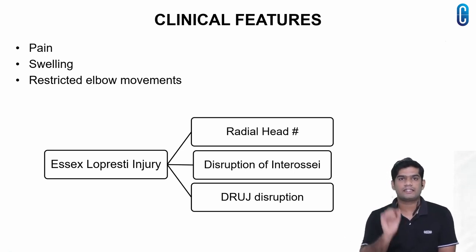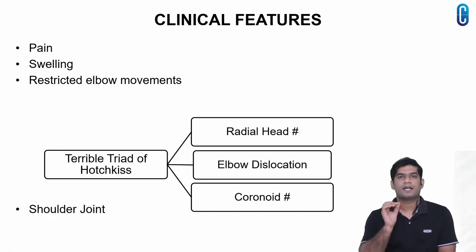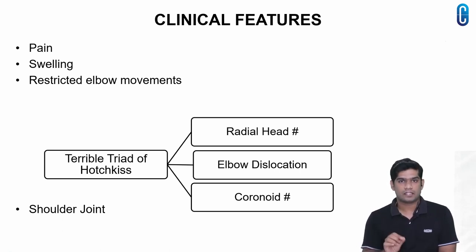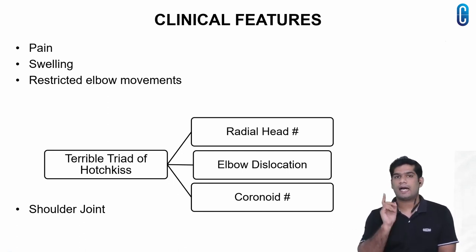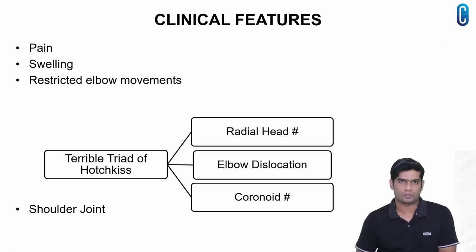Therefore, remember to check for forearm tenderness and wrist tenderness. A clear X-ray image is needed to rule out a terrible triad injury, which includes radial head fracture, elbow dislocation, and coronoid fracture. As it is a high energy injury, always remember to check for shoulder joint injuries also.